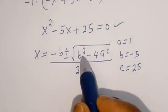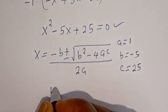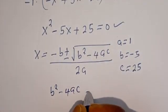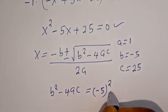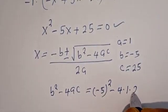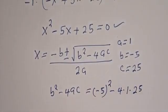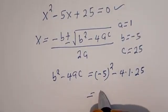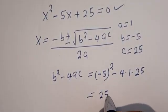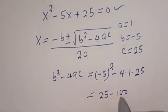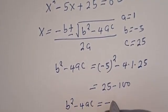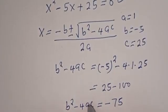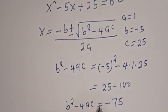Now let's consider the discriminant: b squared minus 4ac is equal to (minus 5) squared minus 4 multiplied by 1 multiplied by 25. This is equal to 25 minus 100. Then b squared minus 4ac is equal to minus 75.